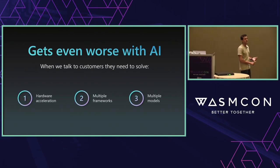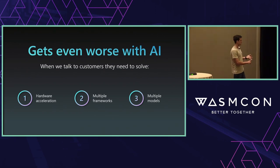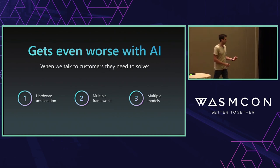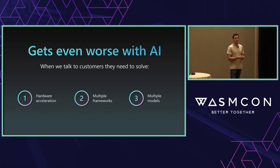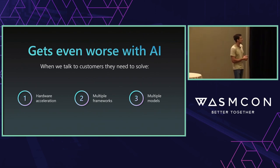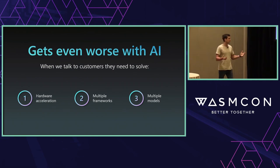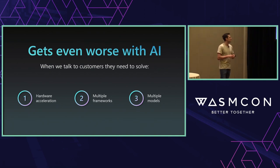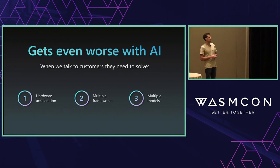When you add AI, it gets even worse. Customers trying to get AI to the edge need to tackle all those challenges, but now also define what hardware acceleration to use: CPU, GPU, NPU, FPGA, VPU — every day there's new hardware to support. There are also multiple frameworks: Keras, PyTorch, TensorFlow, OpenVINO. And multiple models: GPT-3.5, GPT-4, MidJourney v1/v2, LLaMA, and within LLaMA v2 alone you have 7 billion, 70 billion, and 30 billion variants. The support matrix is really, really big.